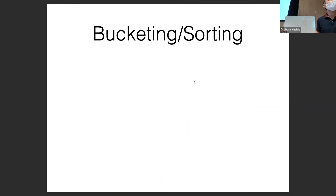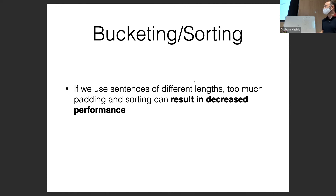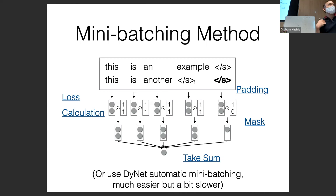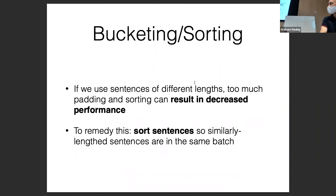Modern sequence modeling toolkits like fairseq do this automatically. If sentences have very different lengths, too much padding and sorting can decrease performance. If most sentences are length 3-4 but one is length 80, you'd be padding all short sentences up to 80 — very wasteful. The solution is to sort sentences so similarly-lengthed sentences are in the same batch and concatenate them together. This applies to all sequence models including transformers.